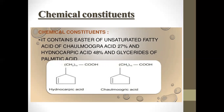You can see the structures of hydnocarpic acid and chaulmoogric acid. In chaulmoogric acid, the carbon chain length is C12, with a terminal cyclopentenyl ring and a carboxylic acid group (COOH). These are the chemical constituents of Chaulmoogra oil.